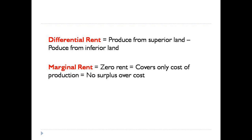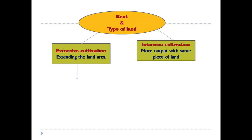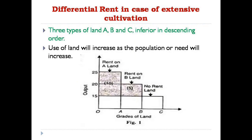There are two types of cultivation. Extensive cultivation means when we extend the area of cultivation. Intensive cultivation means from the same land we can generate more output. For differential rent under extensive cultivation, suppose we take the example of three types of land: A, B, and C. Their inferiority or superiority may be categorized in ascending or descending order — A is more fertile and C is the least fertile of the three.